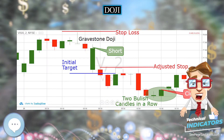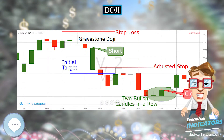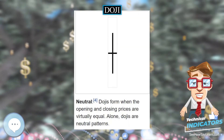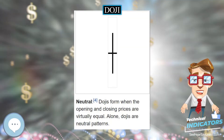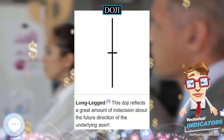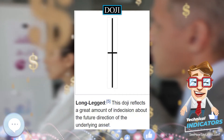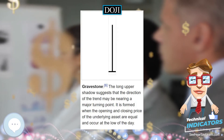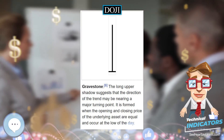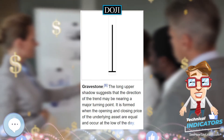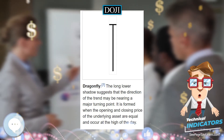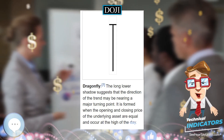Likewise, when the market has been in a downtrend and trades to a new low lower than the three previous trading days, fails to hold that low, and closes in the upper 10% of that day's trading range, there is a high probability of an uptrend in the ensuing days. For a price Doji, it is a horizontal line indicating that the high, low, open, and close were all equal.